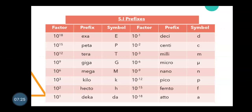10^3 is kilo (symbol: small k). 10^2 is hecto (symbol: h). 10^1 is deca (symbol: small da).